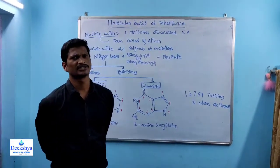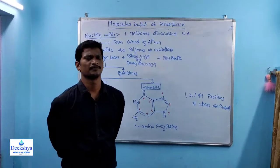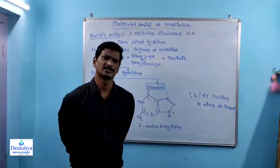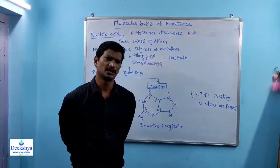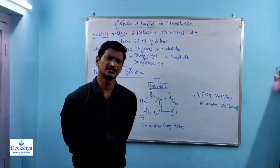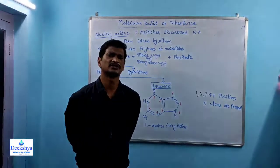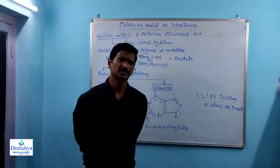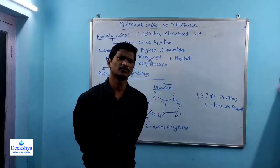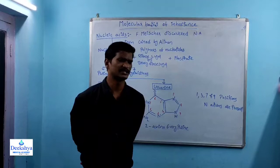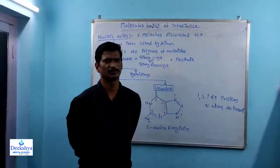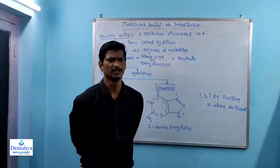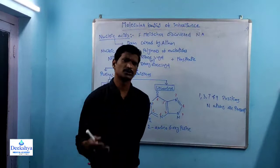In this chapter, we will discuss about how DNA replication takes place, how RNA synthesis takes place, how protein synthesis takes place. Simply, the central dogma of life — we will discuss here. We will discuss about the total central dogma of life.